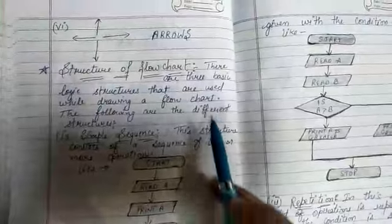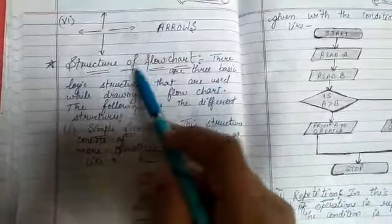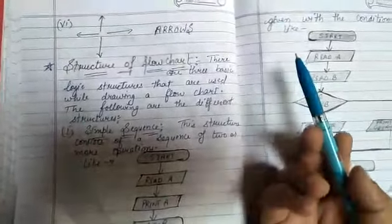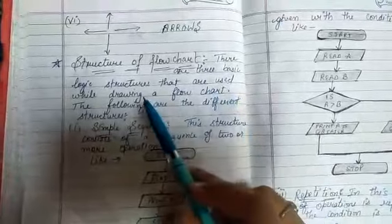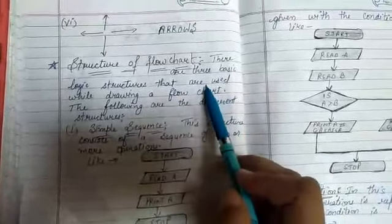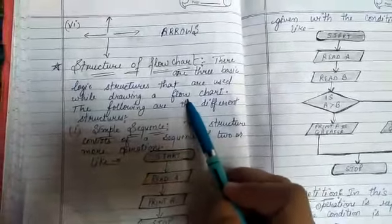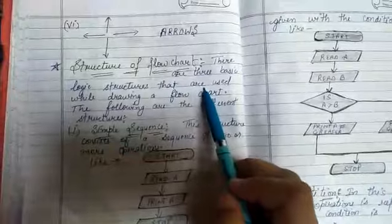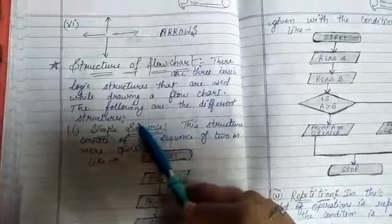Next is structure of flowchart. What is the structure of flowchart? Structure is the building block of a flowchart. There are three basic logic structures that are used while drawing a flowchart. The following are the different structures.